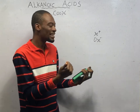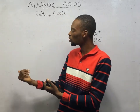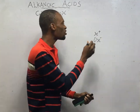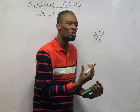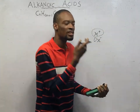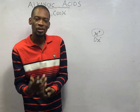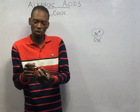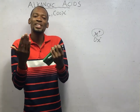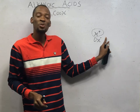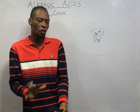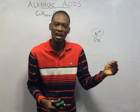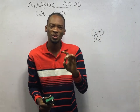According to Bronsted and Lowry, acids are proton donors, while bases are proton acceptors. Hydrogen ion can be referred to as a proton because hydrogen has one proton and one electron. When a hydrogen atom loses the only electron it has, it becomes a hydrogen ion, or a proton. So Bronsted and Lowry describe acids as proton donors and bases as proton acceptors.